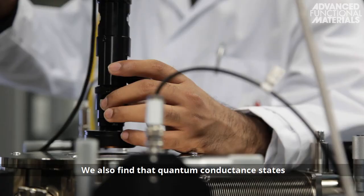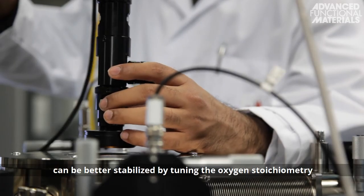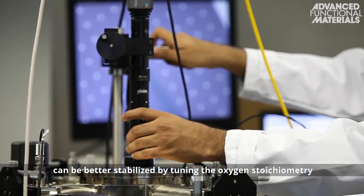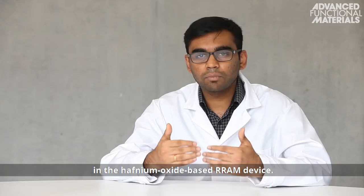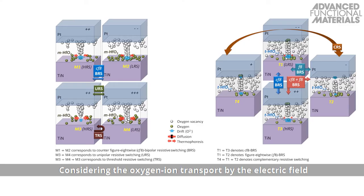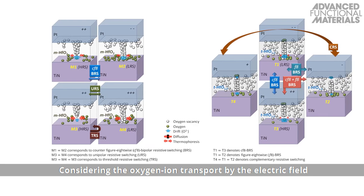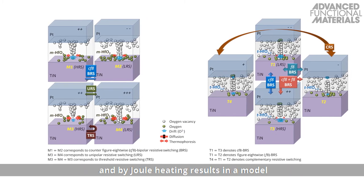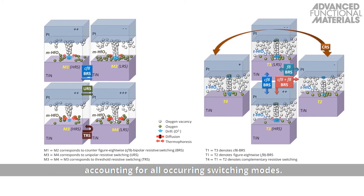We also find that quantum conduction states can be better stabilized by tuning the oxygen stoichiometry in a hafnium oxide-based R-RAM device. Considering oxygen ion transport by the electric field and by Joule heating results in a model accounting for all occurring switching modes.